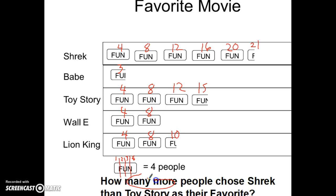How many more? 'How many more' means minus. People chose Shrek — Shrek's at 21. Then Toy Story — Toy Story's at 15. So 21 minus 15 gets me to 6 if I borrow.